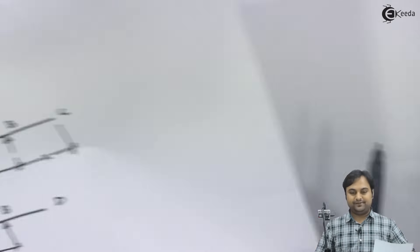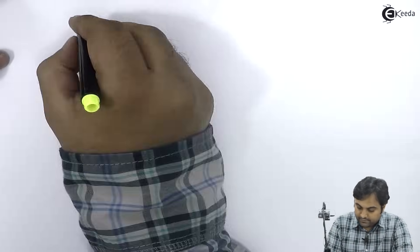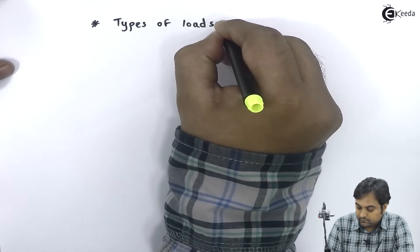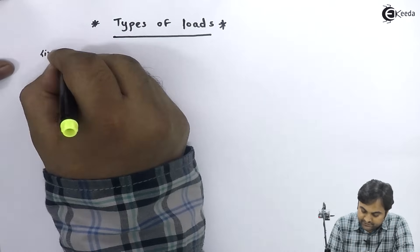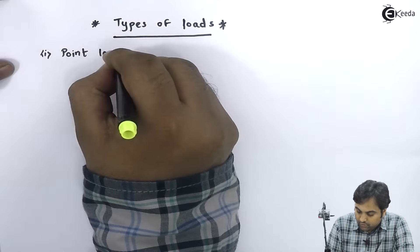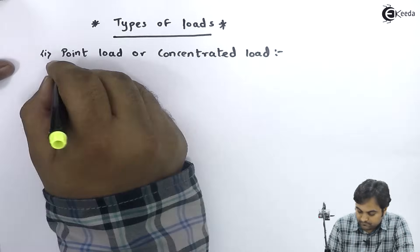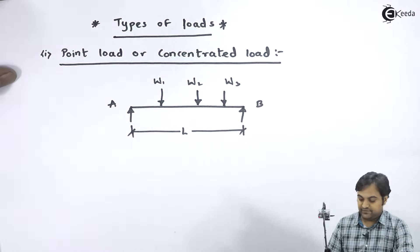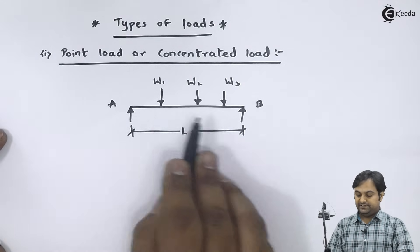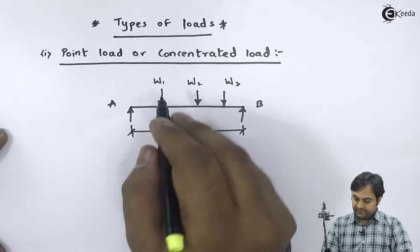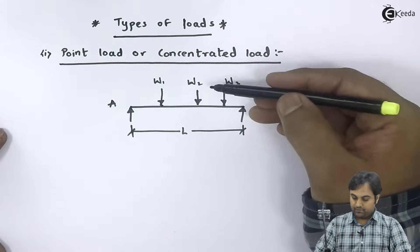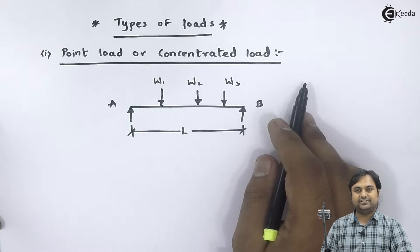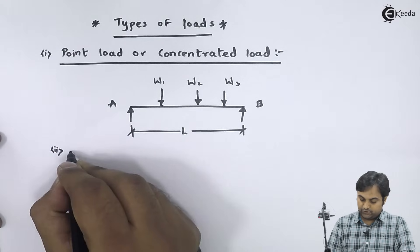Now let me give you the types of loading. Similar to the types of beam, here we have types of loads. The first one is point load or concentrated load. As we see in this diagram, here we have a simply supported beam supported at A and B. If the loading is such that it acts at a point — like w1 acting at a point, w2 acting at a point, similarly w3 — since the load is acting at a single point, it is called a point load or concentrated load.